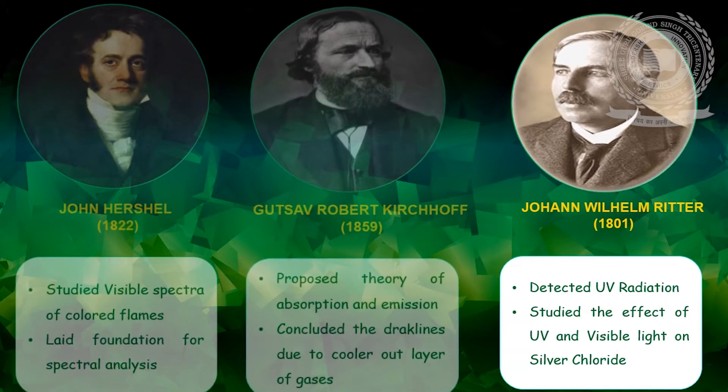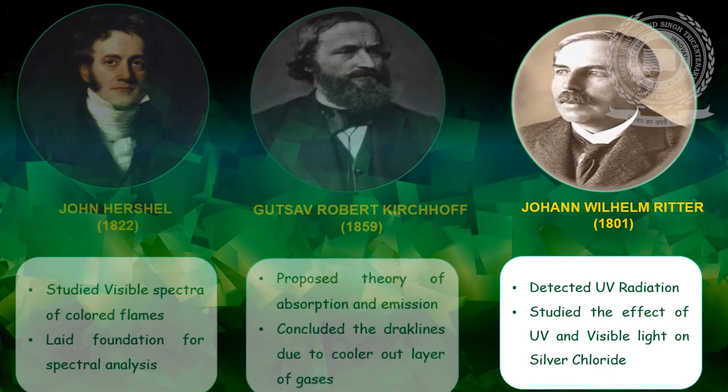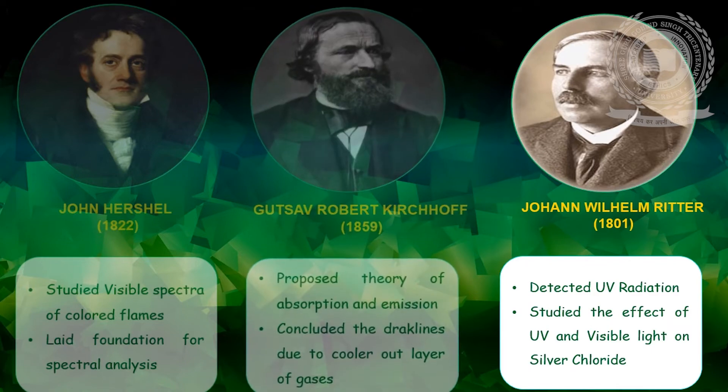In 1859, Gustav Robert Kirchhoff proposed a theory of absorption and emission that attempted to explain the Fraunhofer lines in the sun's continuous solar spectrum. He concluded that the dark lines in the solar spectrum were caused by the cooler outer layer of gases in the sun's atmosphere.